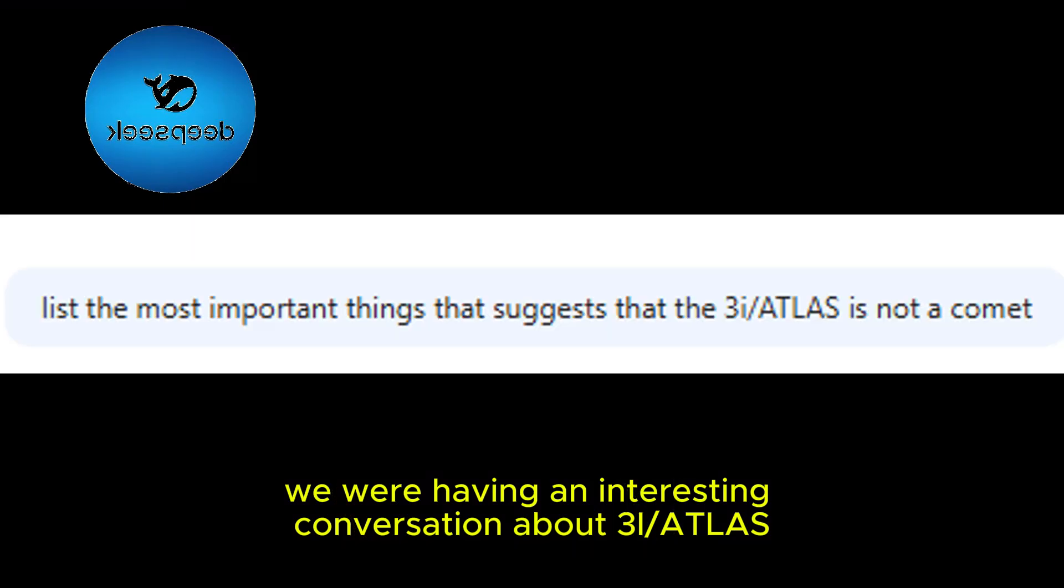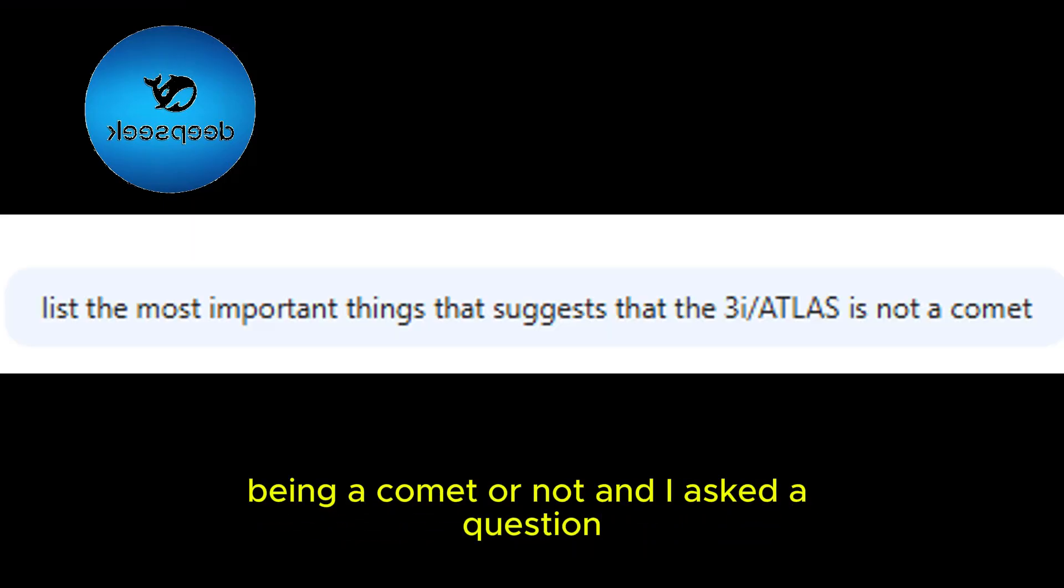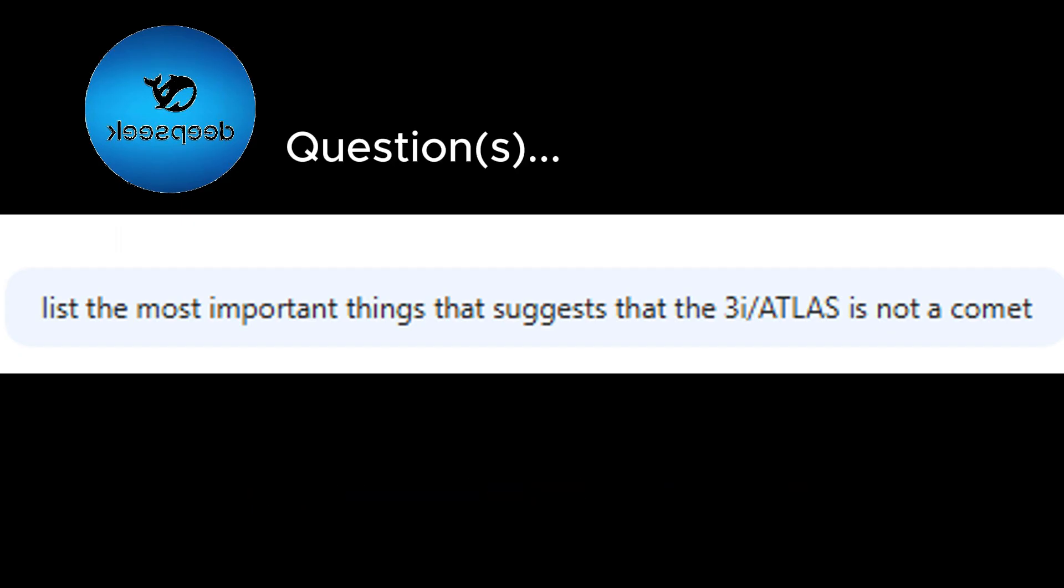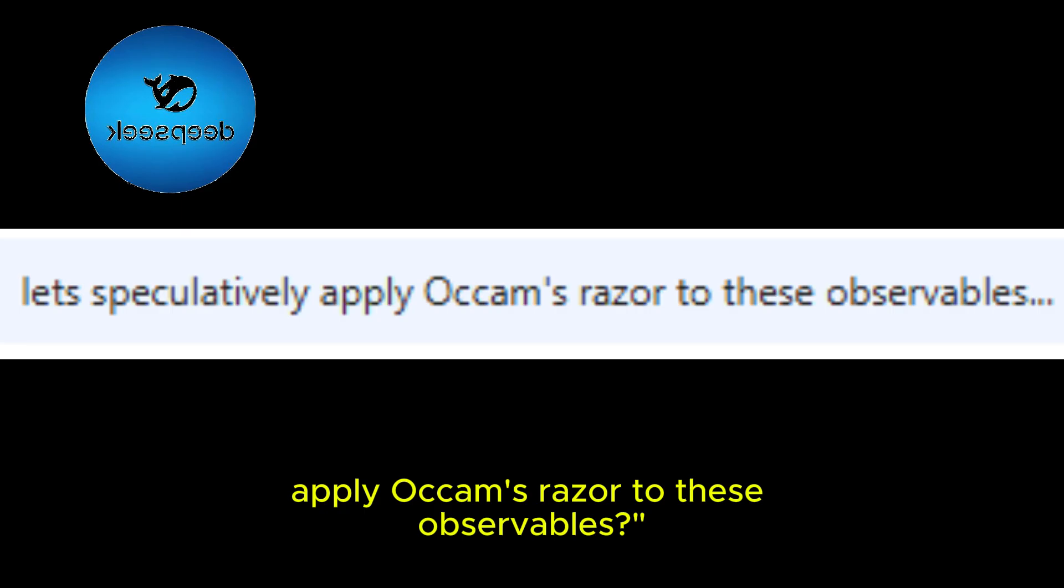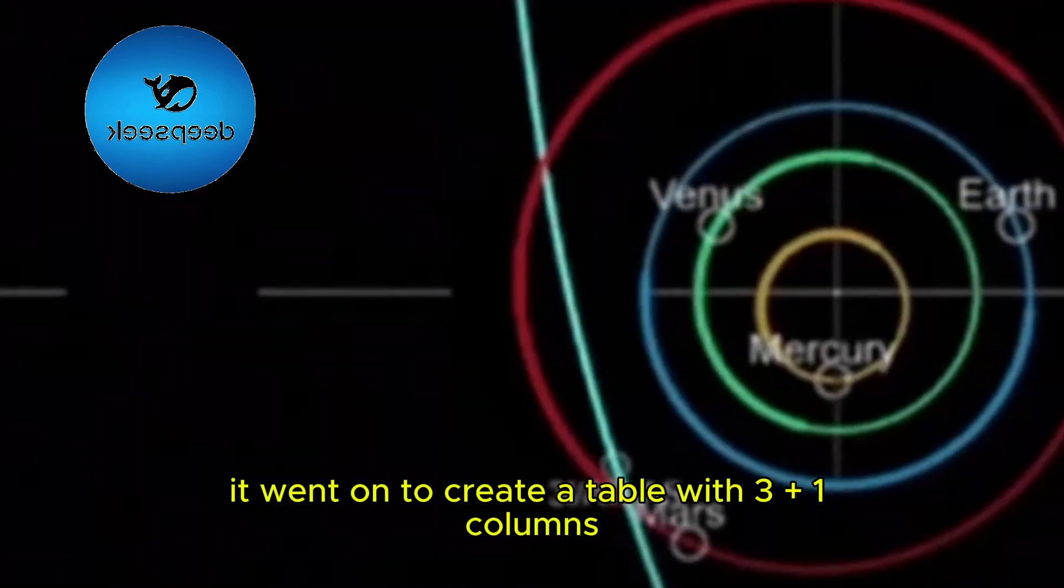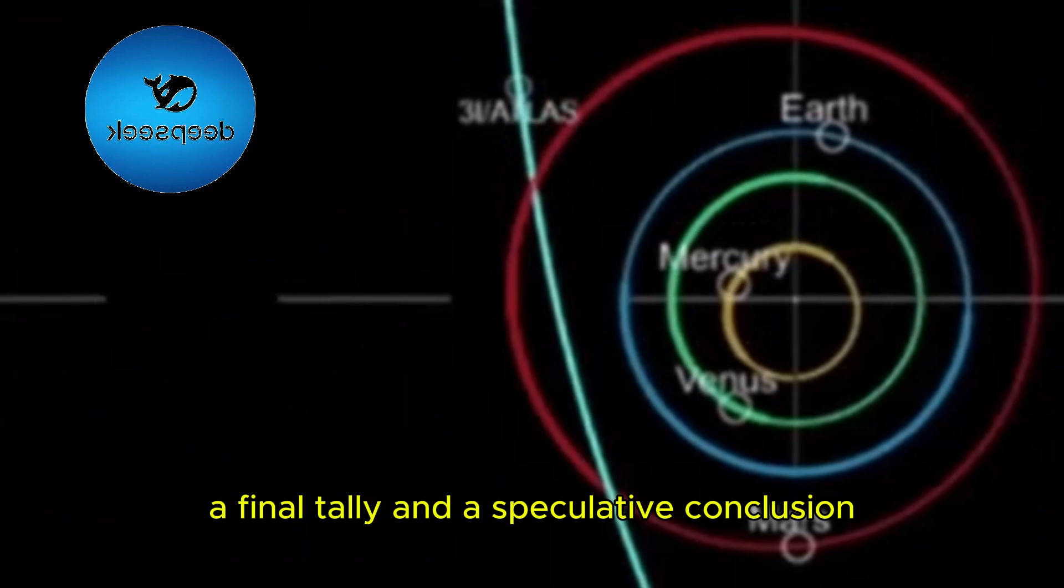We were having an interesting conversation about 3I Atlas and the controversy surrounding it being a comet or not. I asked a question: Let's speculatively apply Occam's Razor to these observables. It went on to create a table with 3 plus 1 columns, a final tally and a speculative conclusion.